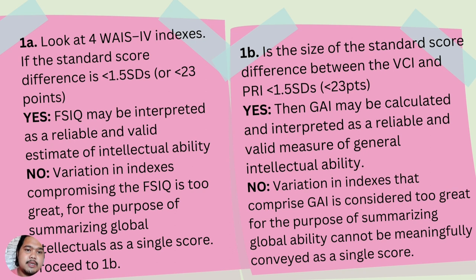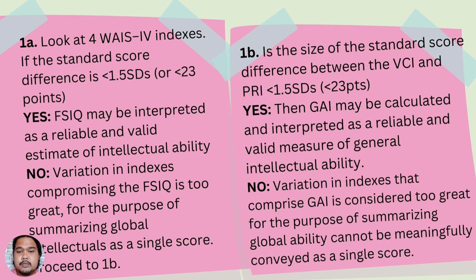Step 1a: Look at the four WAIS-4 indexes. If the standard score difference is 1.5 standard deviations or less, meaning less than 23 points, then FSIQ may be interpreted as a reliable and valid estimate of intellectual ability. If not, the variation in indexes comprising the FSIQ is too great for summarizing global intellectual ability as a single score — proceed to Step 1b.